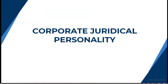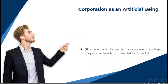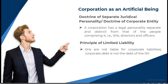Let's now proceed to corporate juridical personality. Based on what we studied earlier — the corporation as an artificial being — the applicable doctrine is the doctrine of separate juridical personality, or the doctrine of corporate entity, which states that a corporation has a legal personality separate and distinct from that of the people comprising it: the stockholders, directors, and officers.